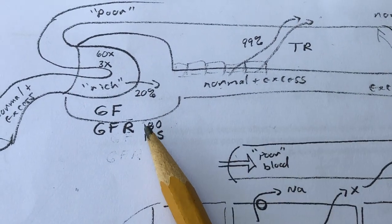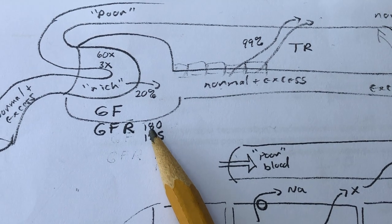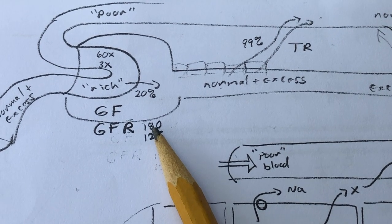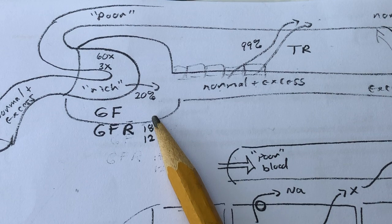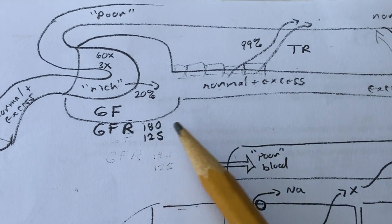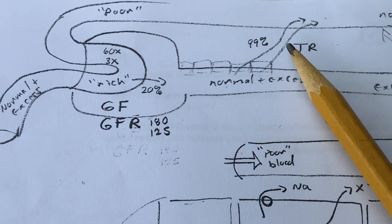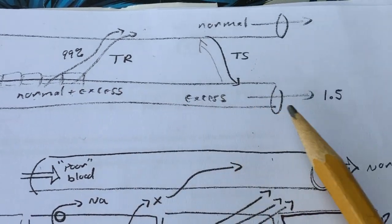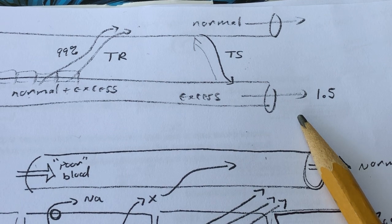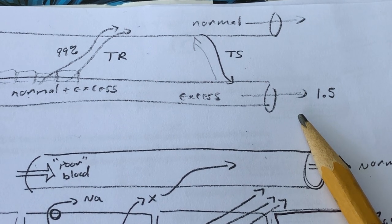That's from the 180 liters of filtrate that are produced per day. Again, of the 180 liters of filtrate produced per day, approximately 99% will be returned right back to the blood.